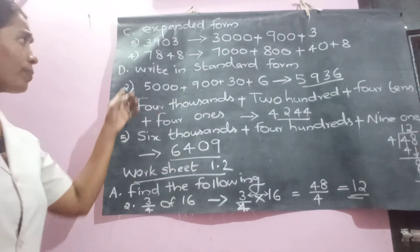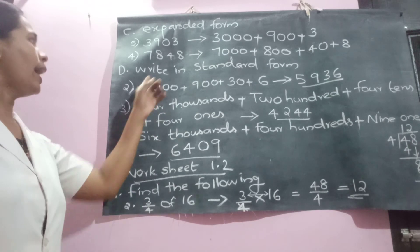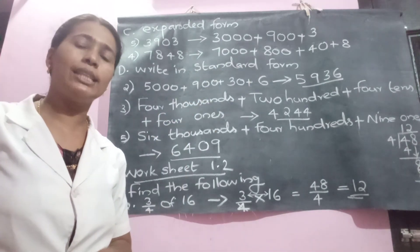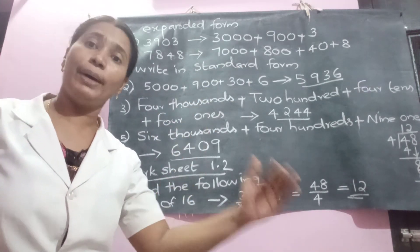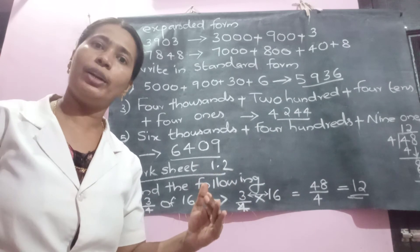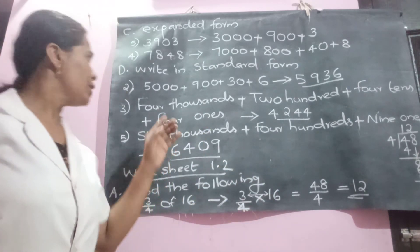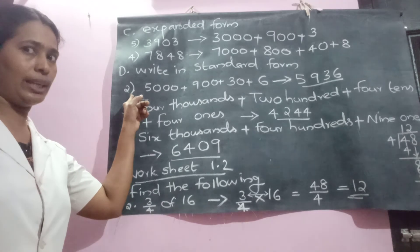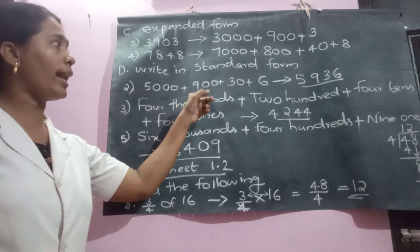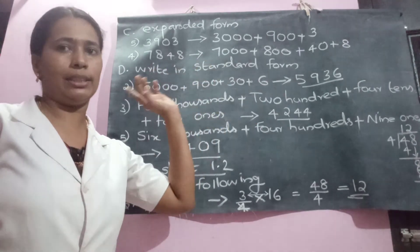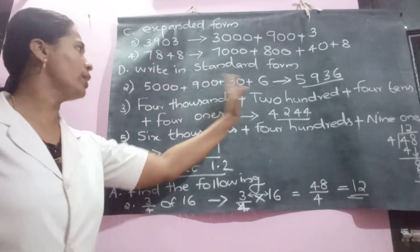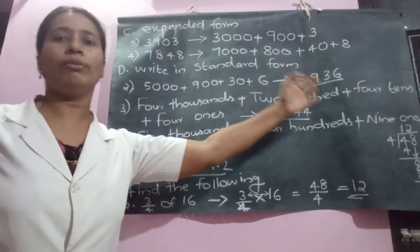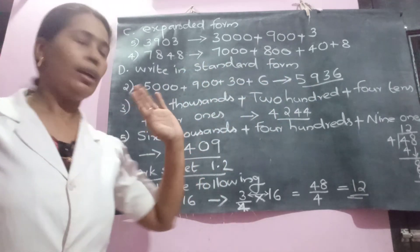Let us move to section D: write in standard form. Standard form means we need to write the corresponding number. The second question gives 5,000 + 930 + 6. Avoid all the zeros and write the number: 5, 9, 3, 6 — giving 5936.